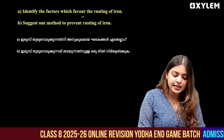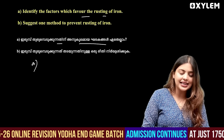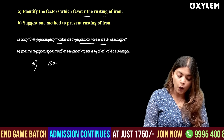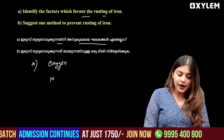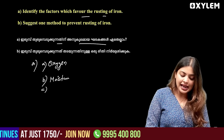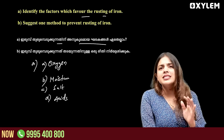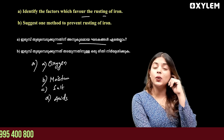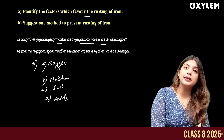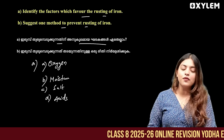Identify the factors which cause rusting of iron. The factors are: presence of water and acid. This suggests one method to prevent rusting of iron — keep iron away from moisture.